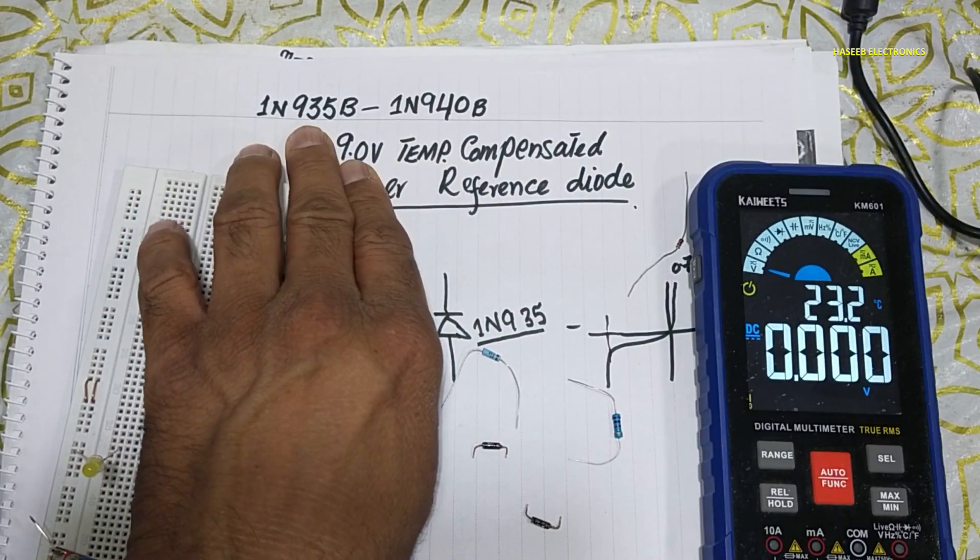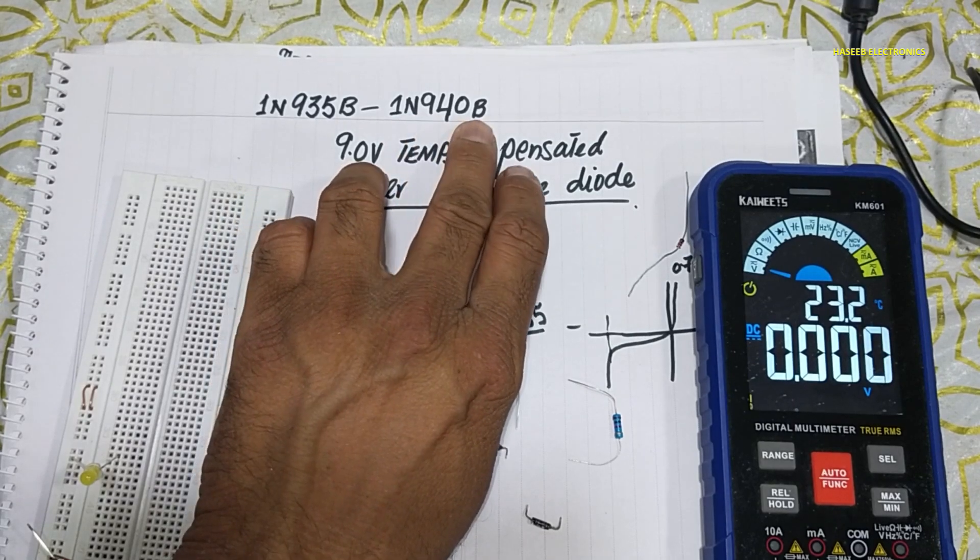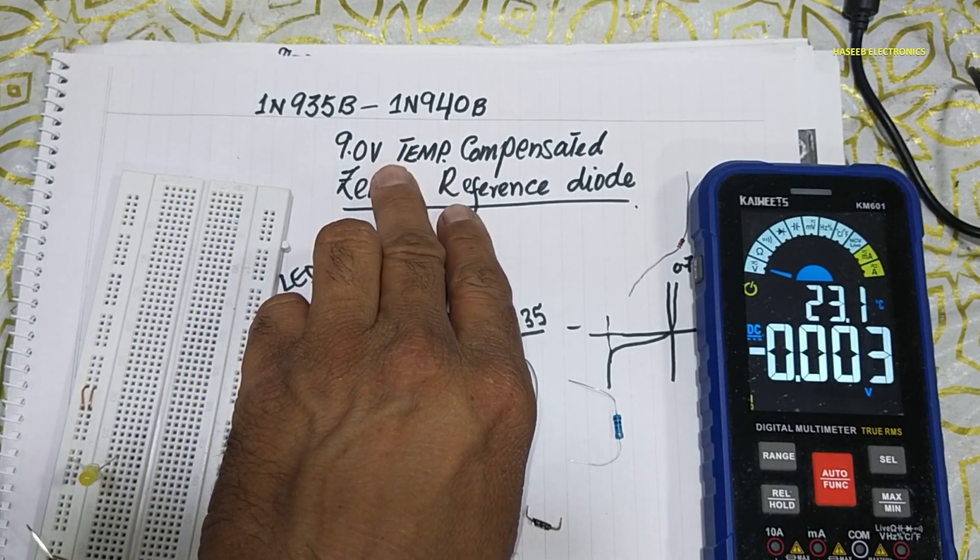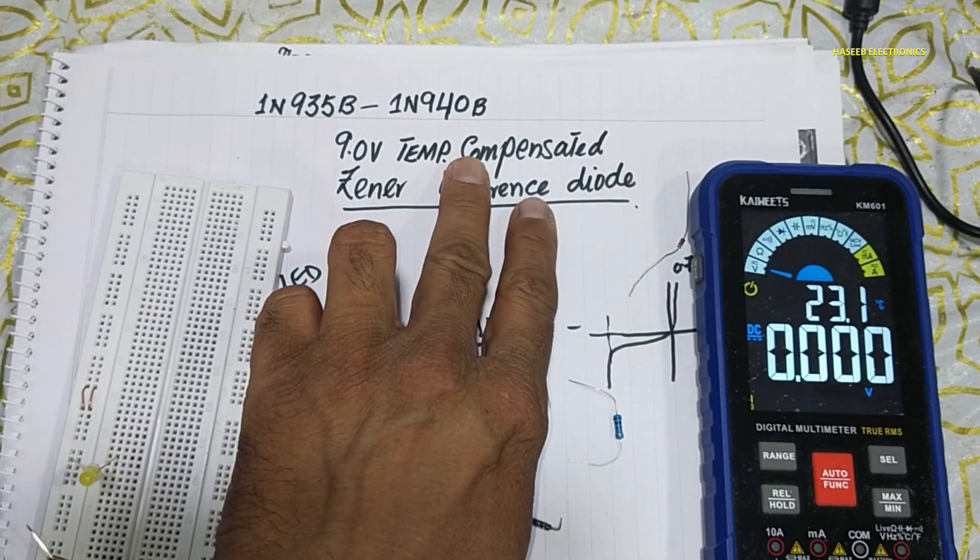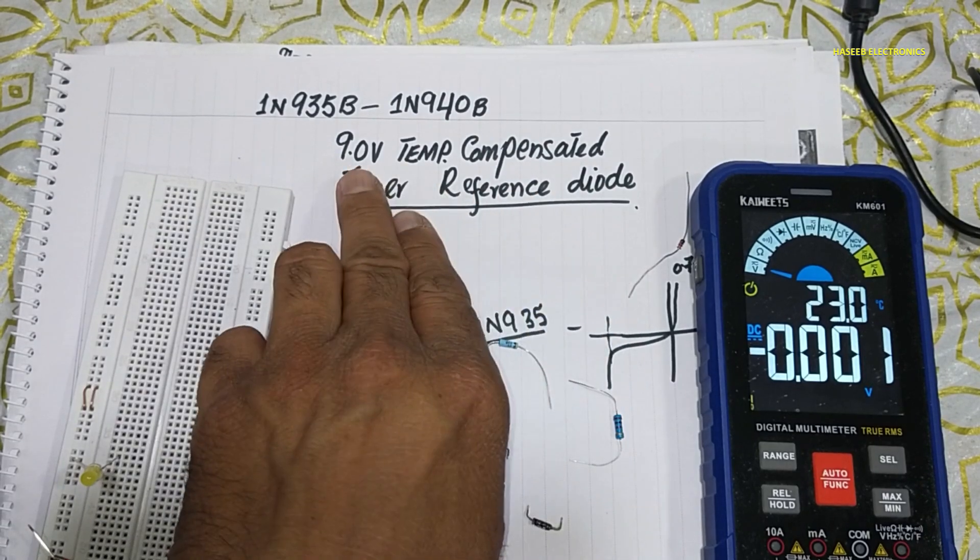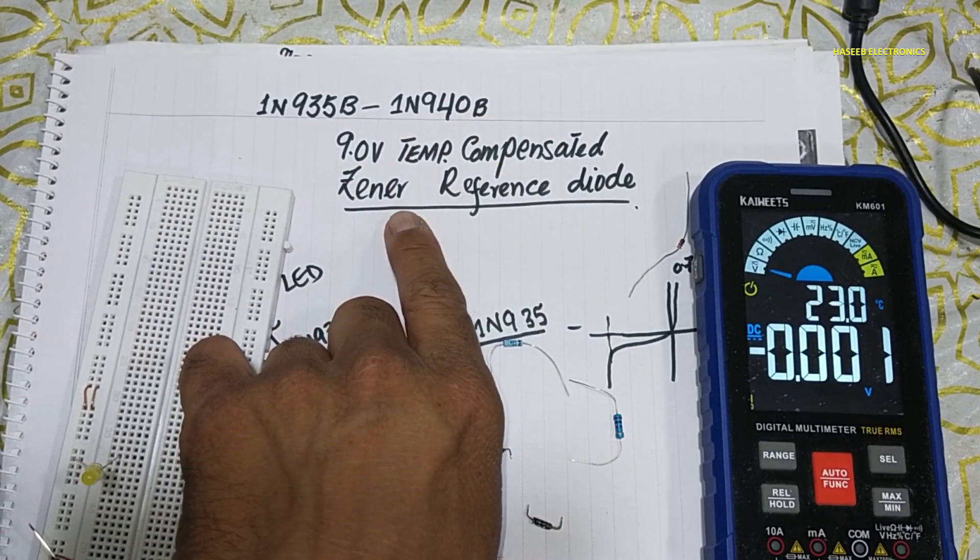Welcome back to my channel. In this session we are discussing 1N935B to 1N940B. These are 9 volt zener voltage temperature compensated zener reference diodes. When we say 9 volt zener voltage, it is a reference diode.